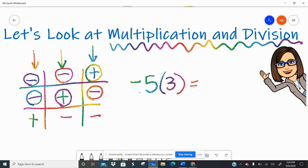If I have negative 5 times 3, remember a number on the outside of the parentheses means multiplication. So if I have negative 5 times 3, the first step is you just ignore the signs. 5 times 3 is 15.